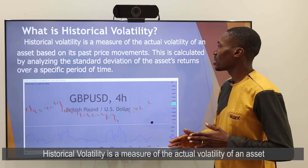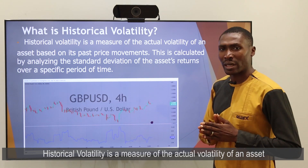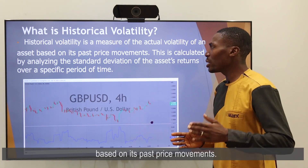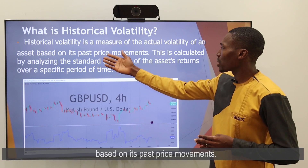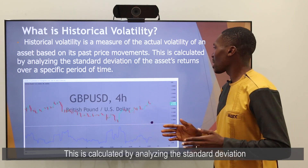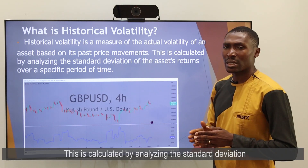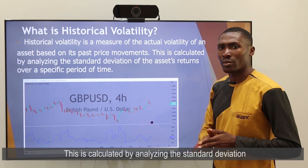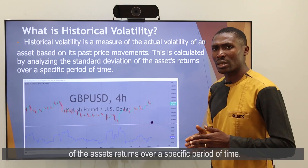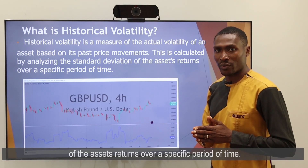Historical volatility is the measure of the actual volatility of an asset based on its past price movement. This is calculated by analyzing the standard deviation of the asset returns over a specific period of time.